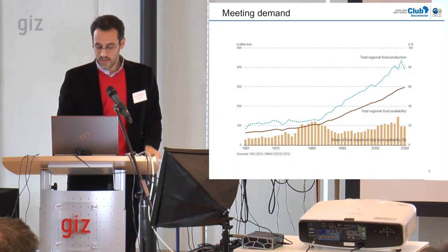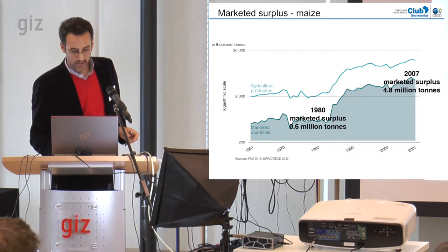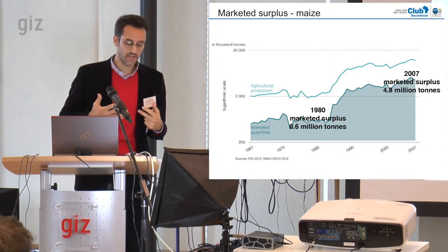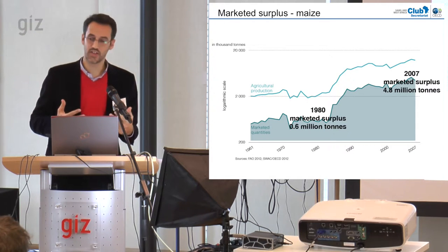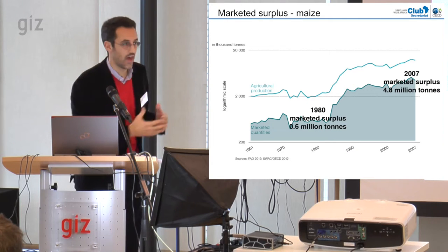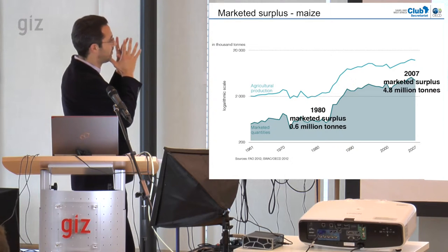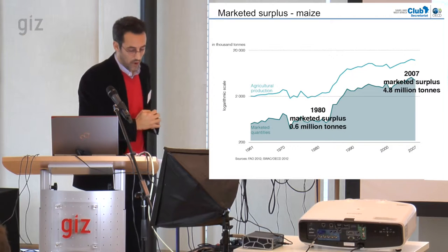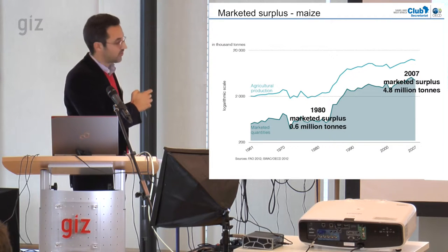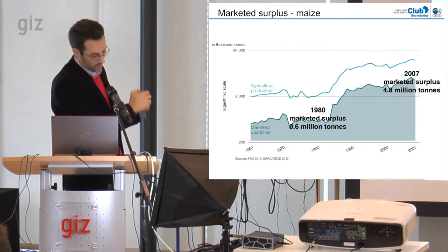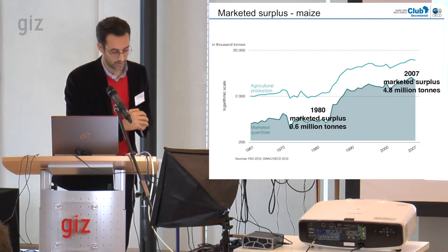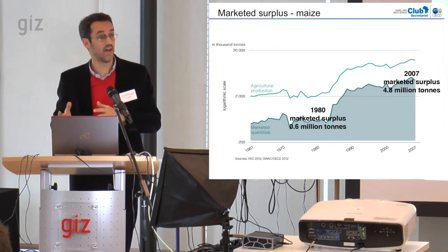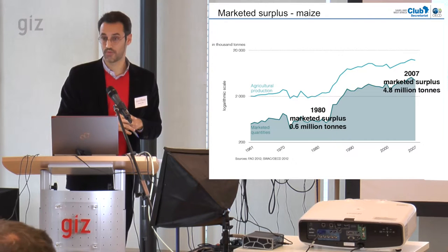This has translated into an increased share of marketed quantities in total production. Focusing just on maize, we observed that marketed surpluses are rising faster than production, reflecting the shift of maize towards a cash crop today.